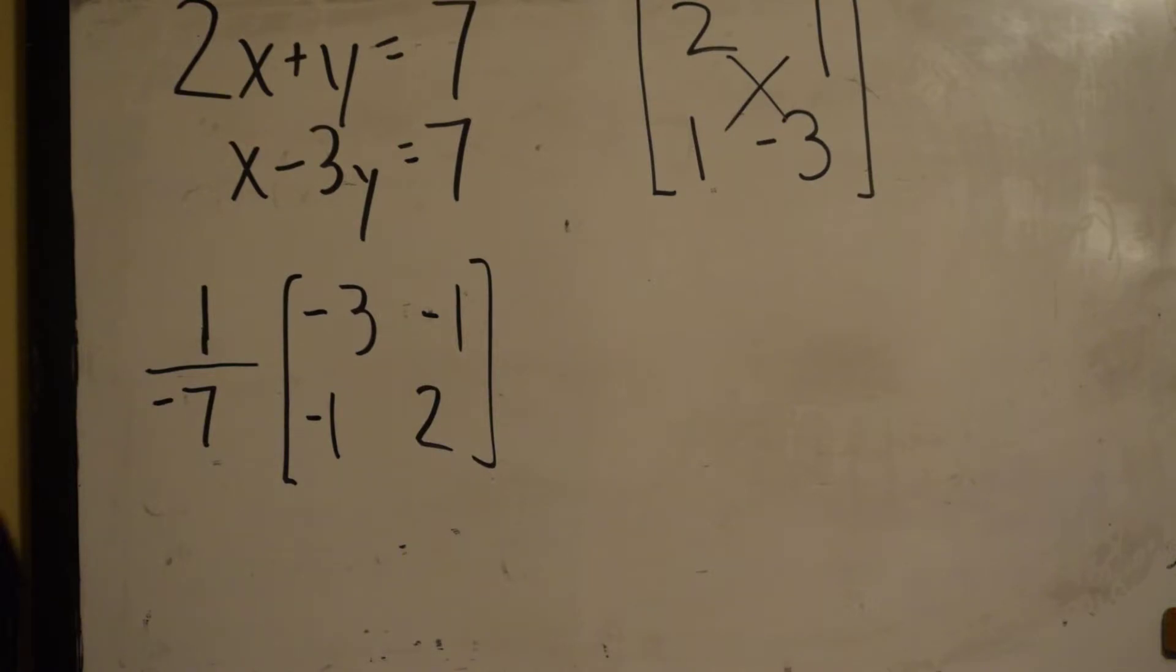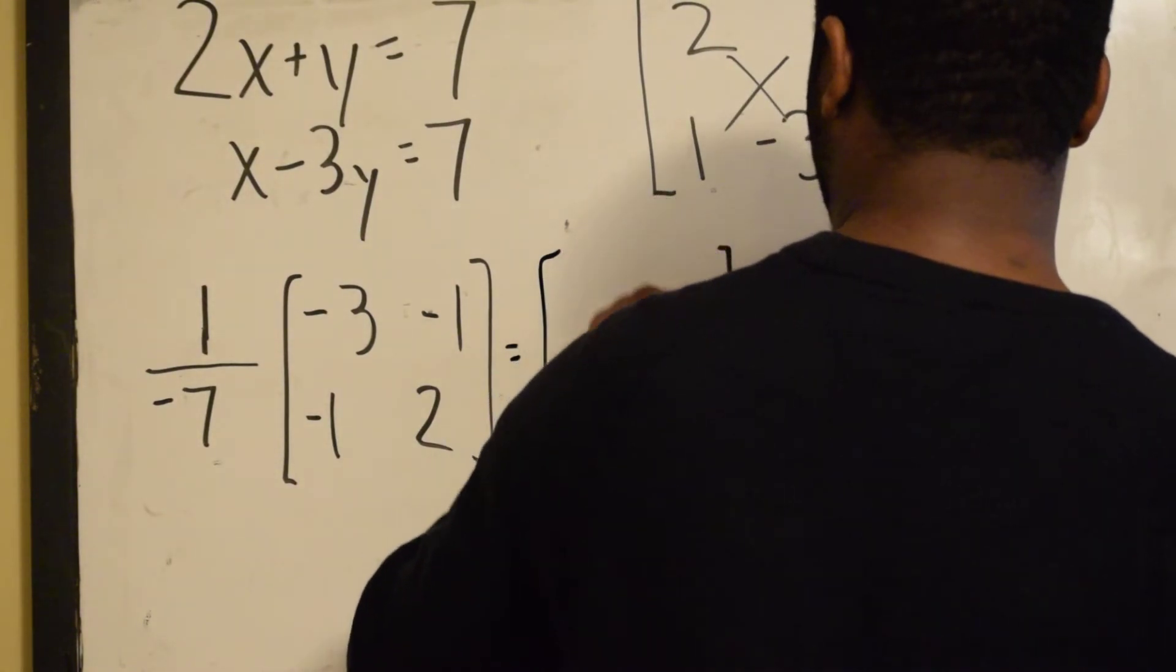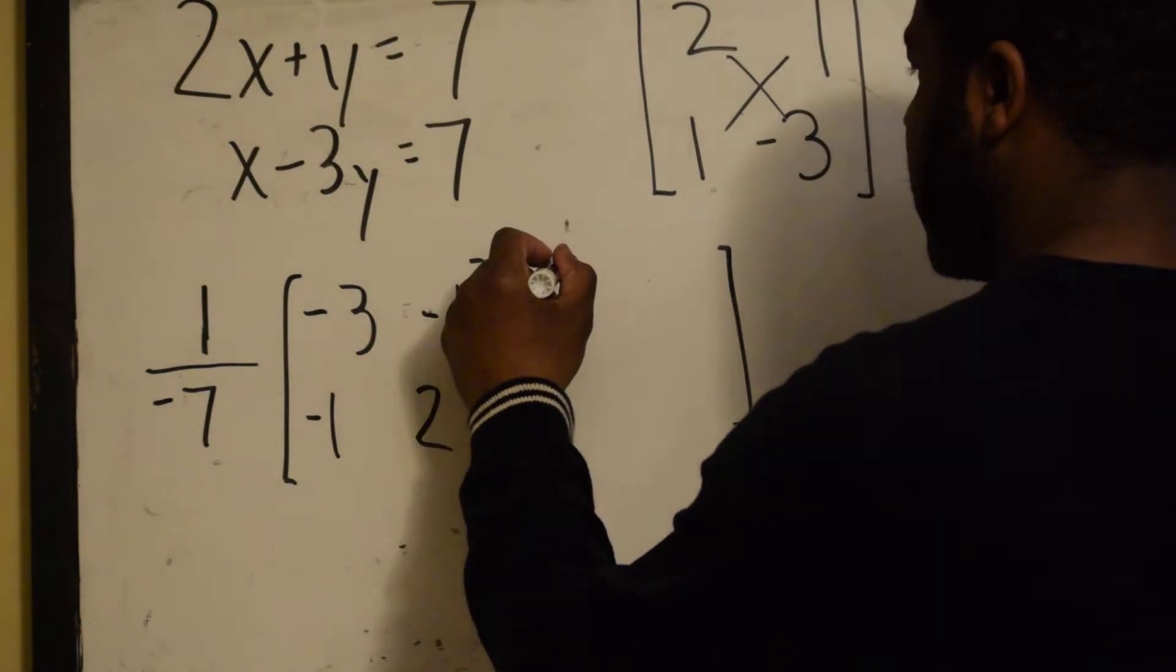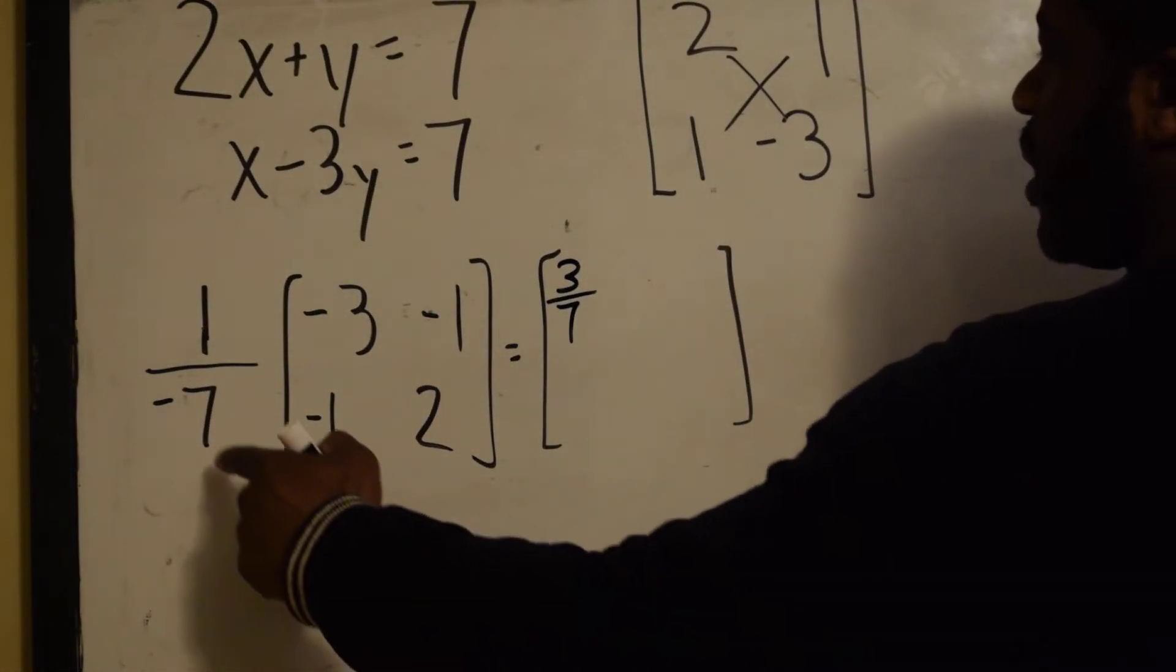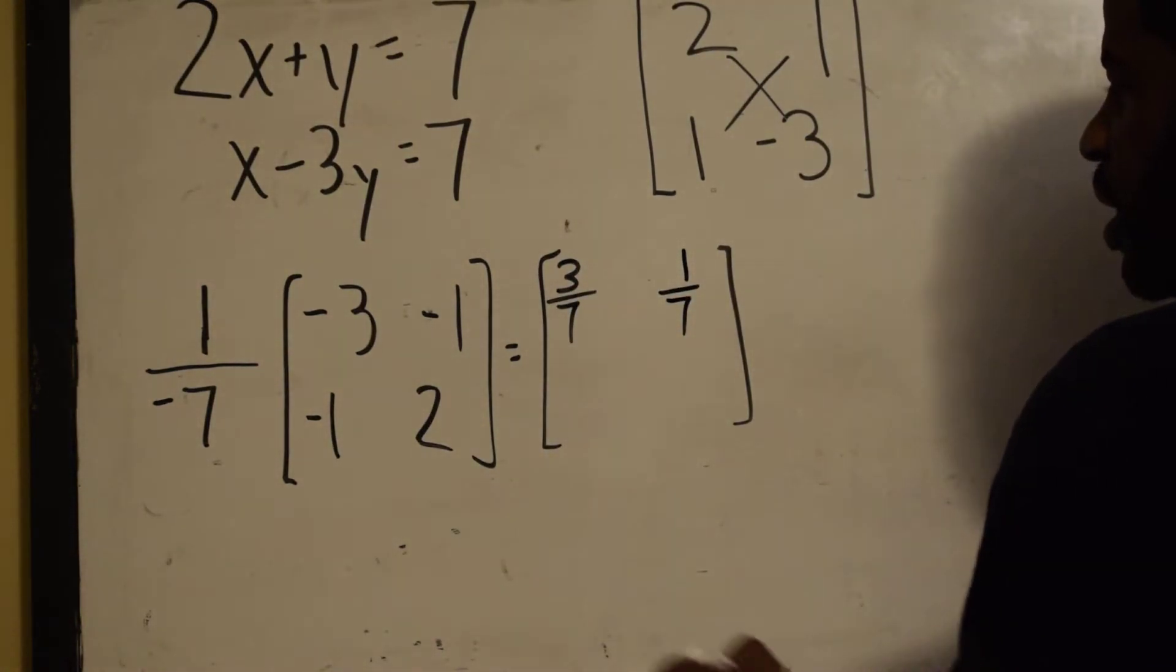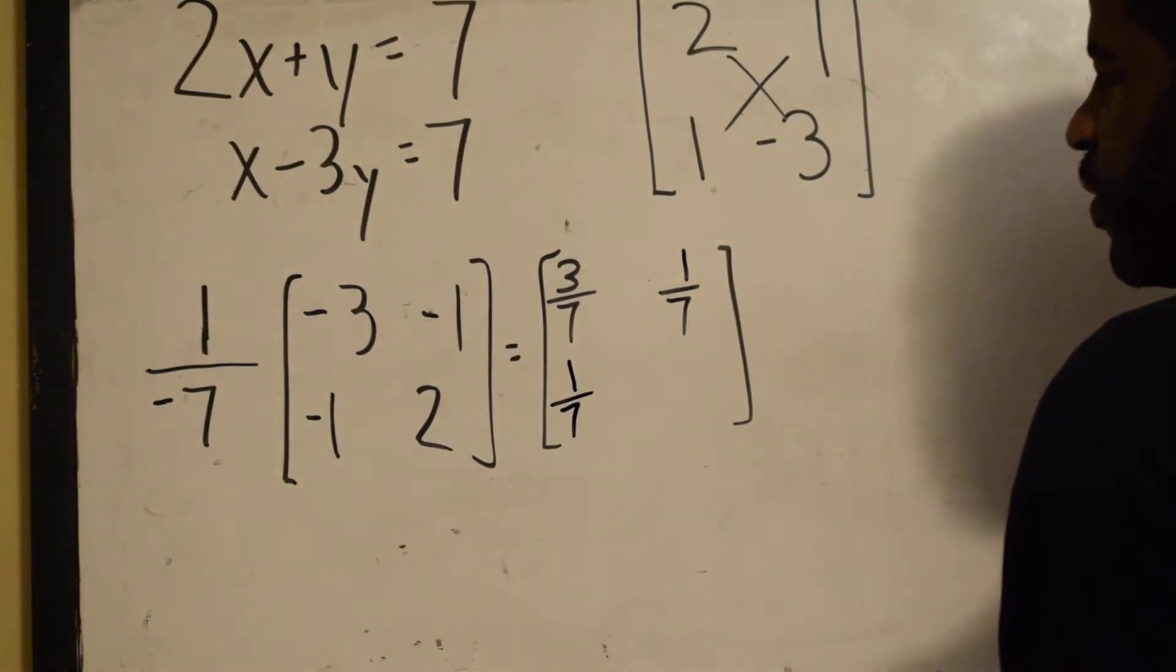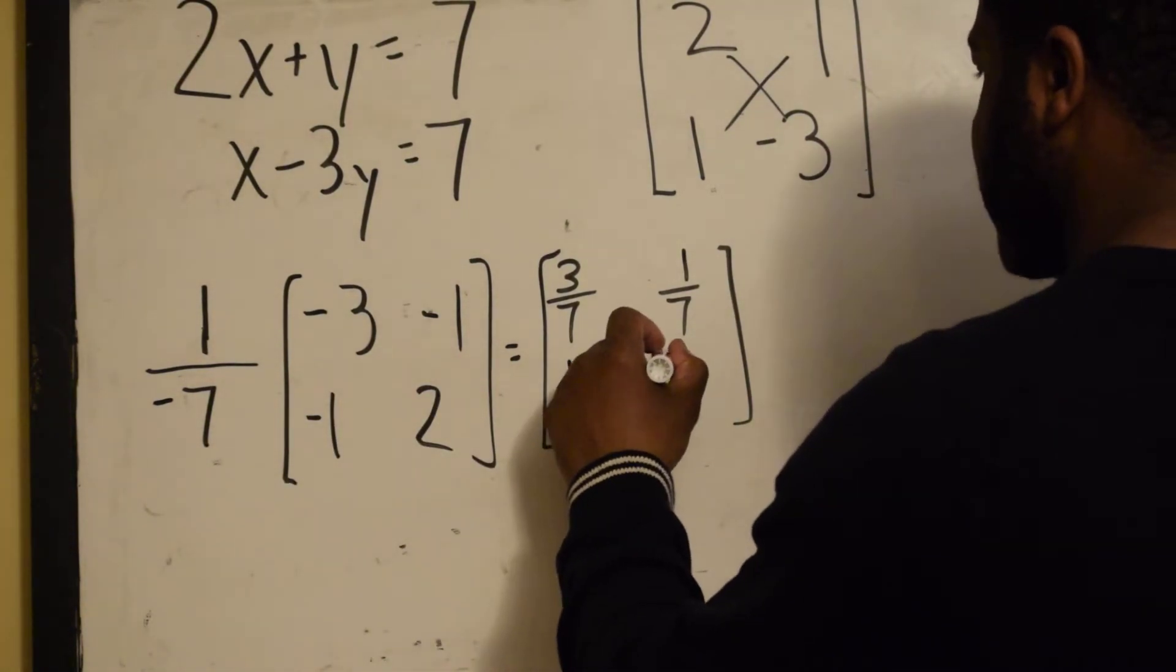So our final inverse is going to be negative 1/7 times negative 3, we use scalar multiplication as positive 3/7. Negative times negative as positive 1/7. Negative 1/7 times negative 1, positive 1/7. And negative 1/7 times 2 is negative 2/7.